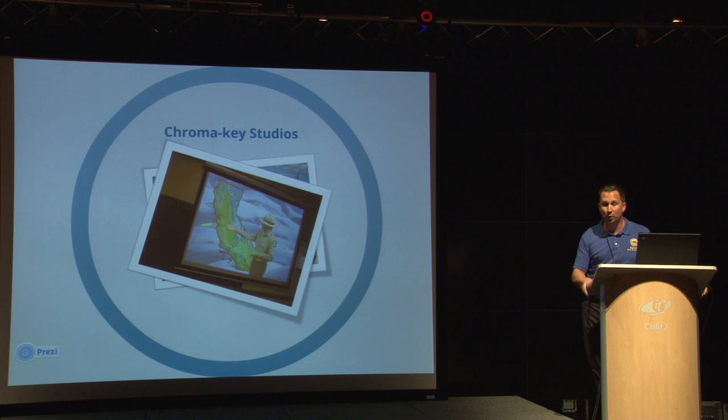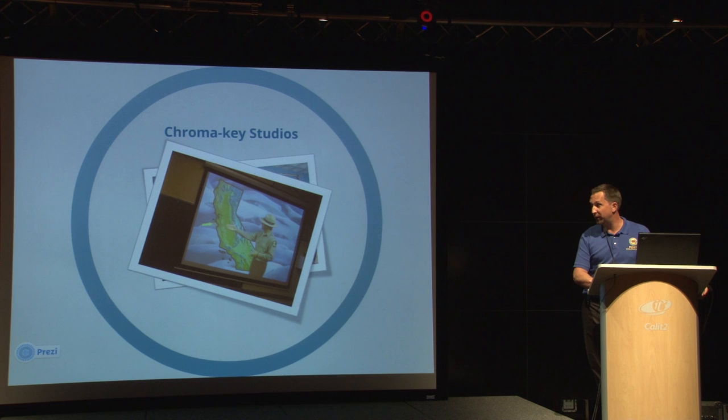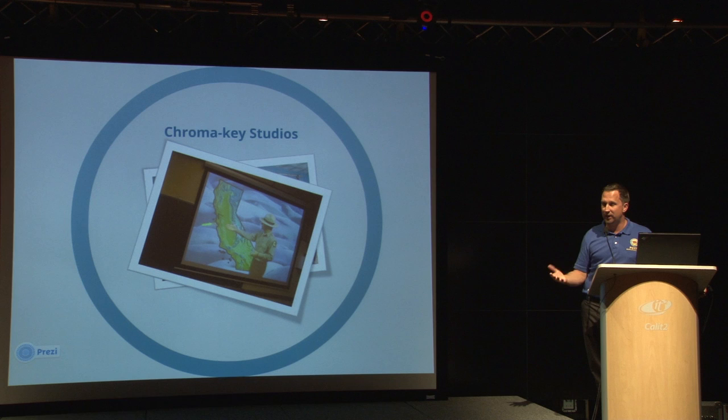We have four different sites around the state: one in Anza Borrego Desert, one in Santa Cruz, one in North Coast Redwoods, and one in Columbia State Historic Park in the foothills of the Sierras. We can take the students on any adventure in that park, pretty much any time.